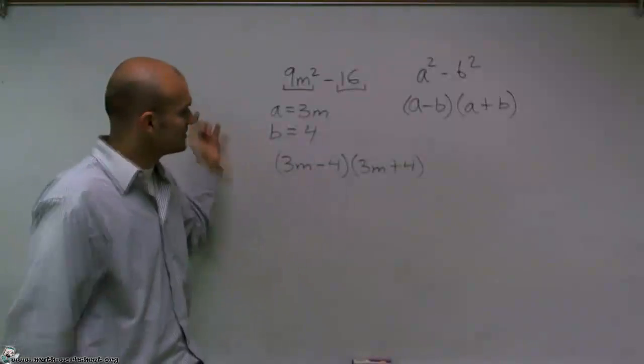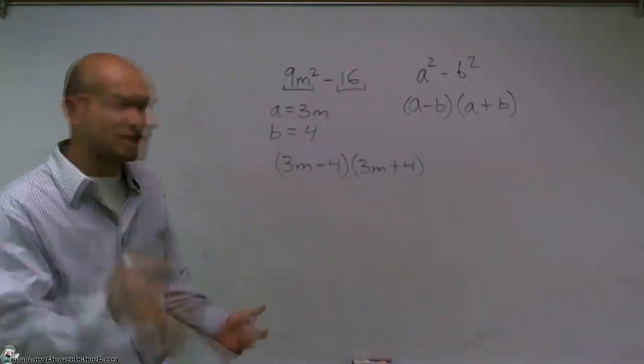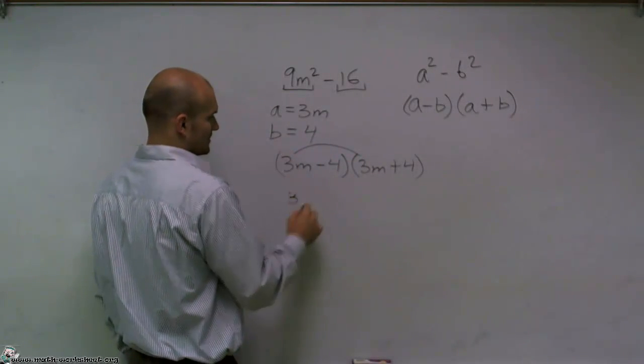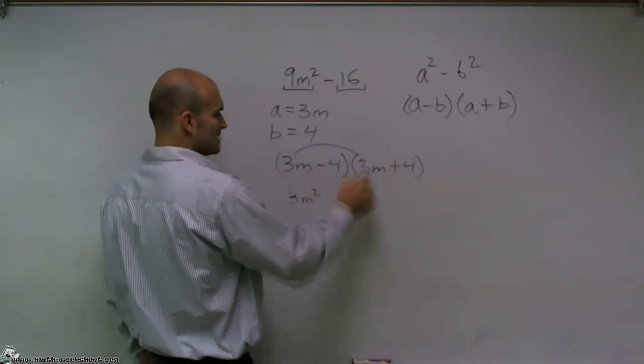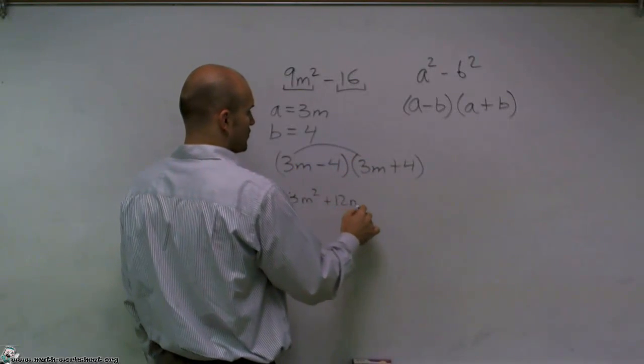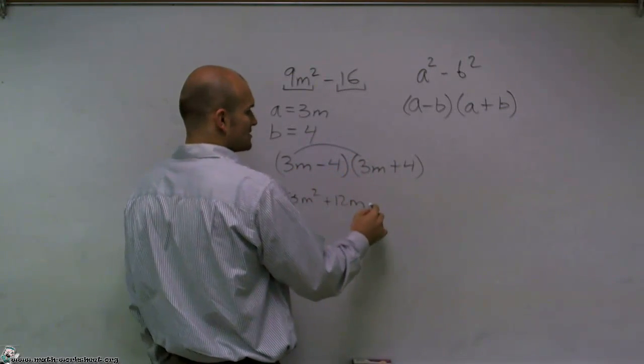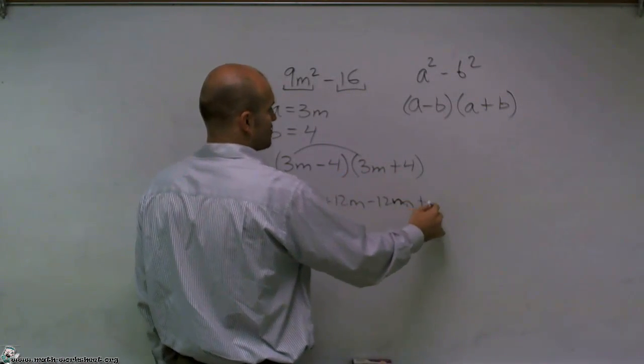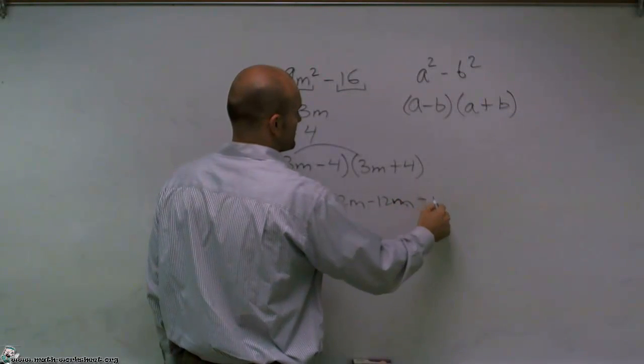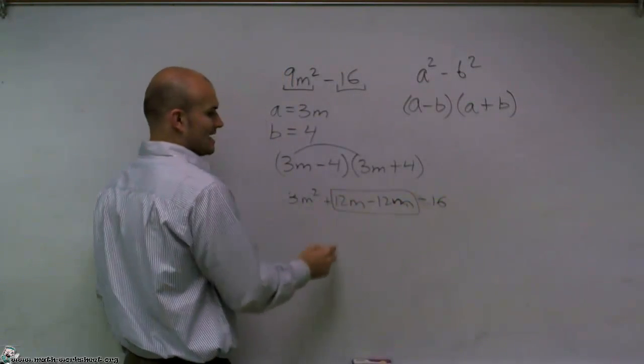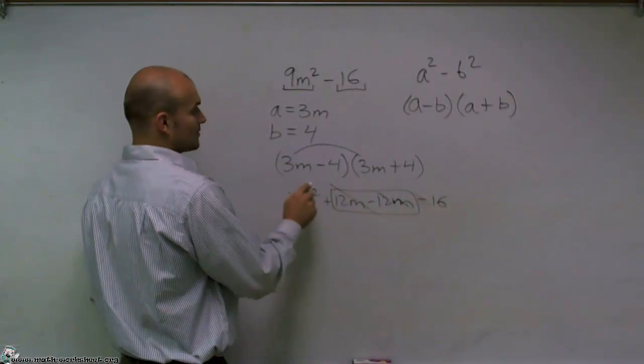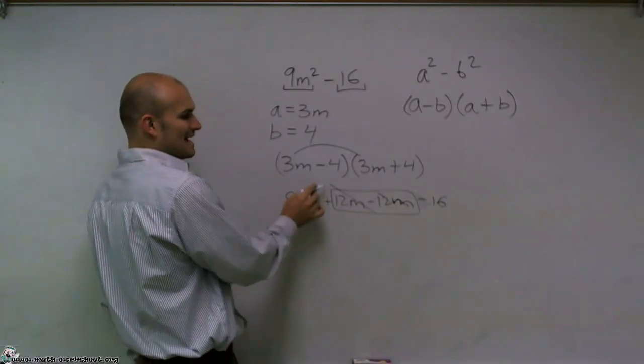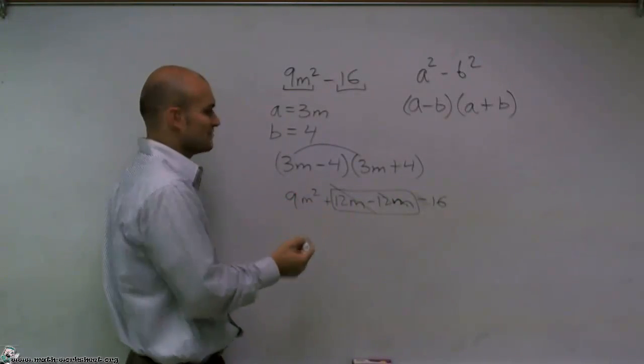And then, you can simply write it as a difference of two squares. Now, we can always check our work by doing the FOIL technique. 3m times 3m equals 9m squared. 3m times 4 equals positive 12m. Negative 4 times 3m is negative 12m. And negative 4 times 4 is negative 16. These two terms are going to cancel out, and you're left with 9m squared minus 16, which is your final answer.